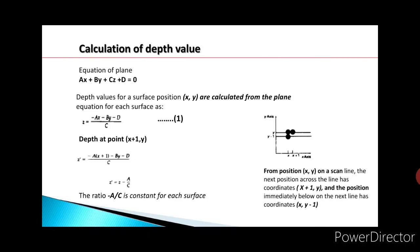To calculate the new z-coordinate value, we use the equation from the plane: z = (−Ax − By − D) / C. Substituting the new point (x+1, y) gives z' = (−A(x+1) − By − D) / C. After simplification, z' = z − A/C. So from the previous depth value at (x, y), we can calculate the next depth value at (x+1, y).